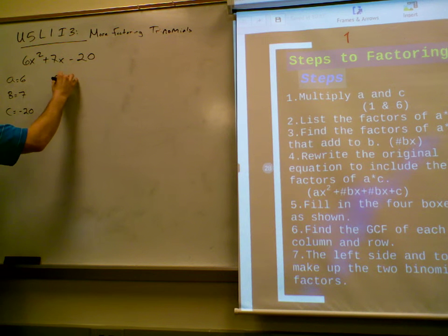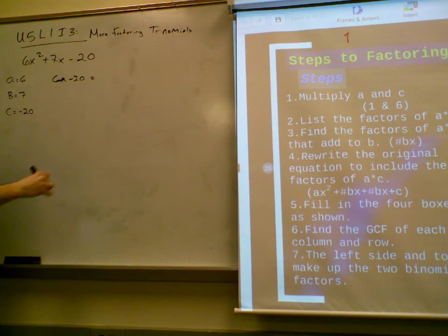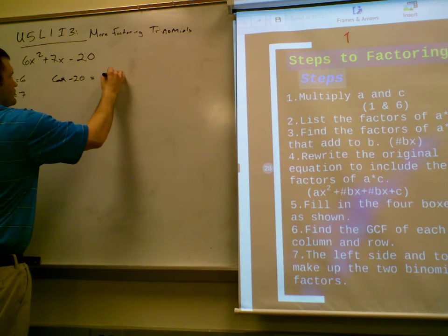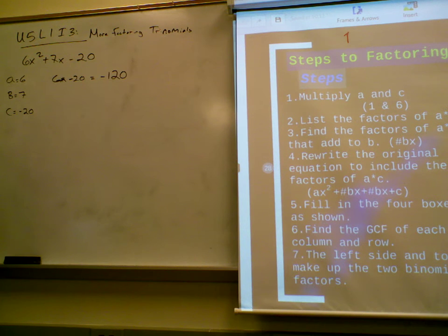So, 6 times negative 20. What does that equal? Negative 120. So now we need to find the factors of negative 120, right?